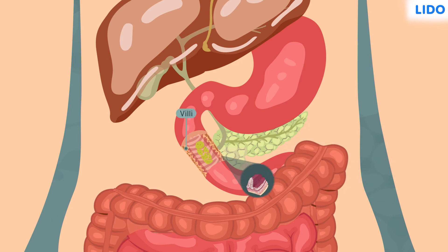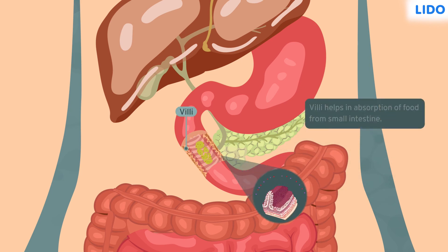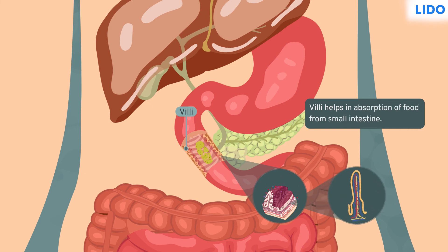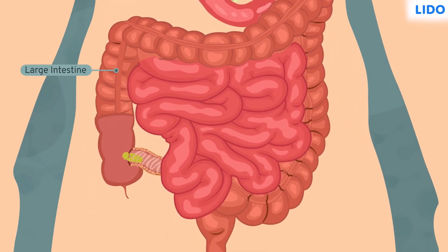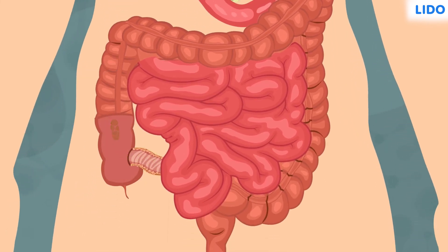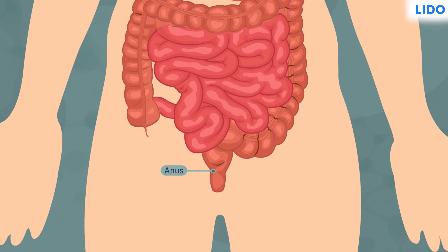The blood vessels and lacteals in the villi of the small intestine absorb this simpler form of digested food, which is transported to every cell of the body. The undigested food is eliminated from the body from the large intestine as feces.